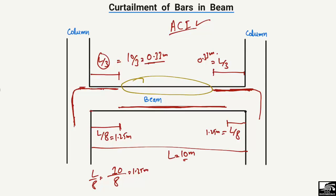We don't have bending moment in the middle region at the top, so we don't need to provide bars there. We cut the bars to take tension forces and bending moment only in regions where they are maximum. This saves money through curtailment of bars. Don't forget to subscribe to the channel for daily civil engineering videos. Thank you for watching.